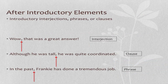Another use of the comma is after introductory elements. When we have elements at the beginning of a sentence before the main clause, we need a comma after them. These could be interjections — expressions of emotion — introductory clauses (groups of words with a subject and verb), or introductory phrases. For example, 'Wow, that was a great answer.' If we join 'wow' to the sentence, we use a comma after it; if it's a stronger interjection, it becomes 'Wow!' followed by a new sentence. 'Although he was tall, he was quite coordinated' is an introductory clause example.